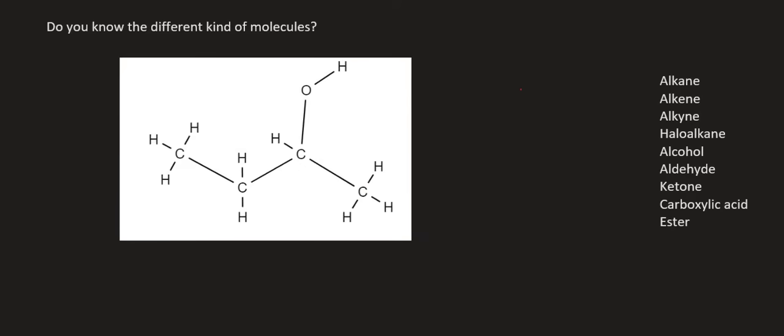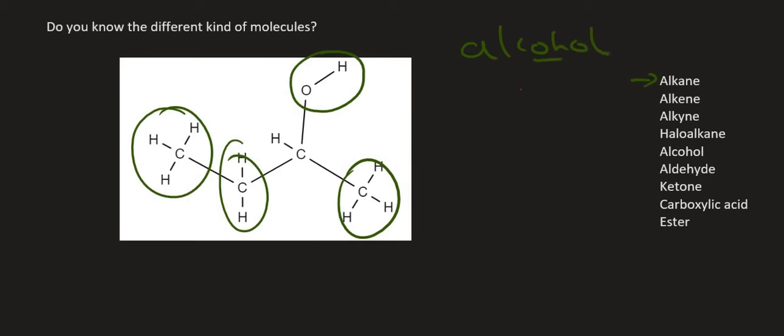So here we've got normal carbons and hydrogens, and that's normal for an alkane. But then we've got an OH. Now remember that is an alcohol, because in the word alcohol we also have an OH. Does that mean that all particles or molecules with OHs are alcohols? No, as we'll see later on and what we also saw in the previous video is